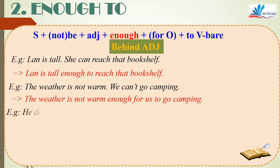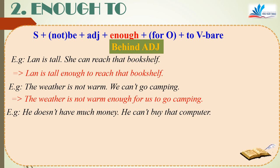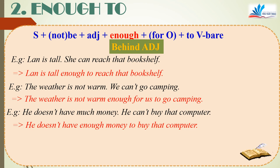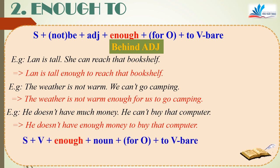Trong ví dụ tiếp theo, không có tính từ mà xuất hiện danh từ đứng bên cạnh enough. Với danh từ, enough sẽ đứng ở trước danh từ. Cấu trúc: Subject + verb + enough + noun + (for object) + to + verb bare.